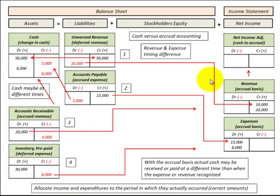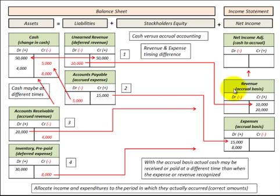To summarize: with cash basis accounting, we recognize revenue and expenses only when we actually receive or pay cash. With accrual basis accounting, we use asset and liability accounts on the balance sheet to allocate revenues and expenses to the period in which they actually occur. The accrual basis creates a timing difference between our cash receipts and payments and what we recognize as revenue and expenses on our income statement.